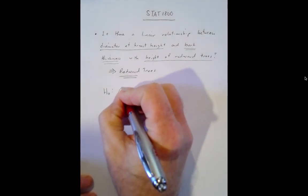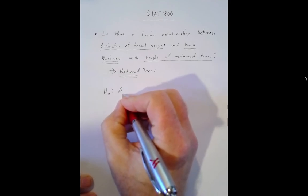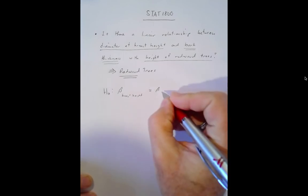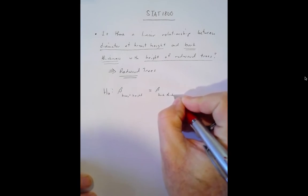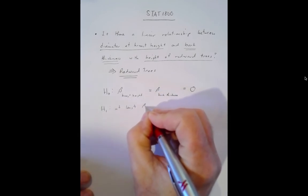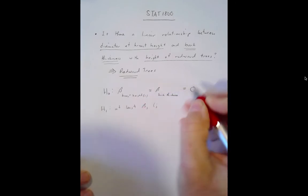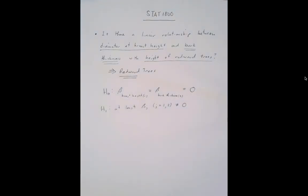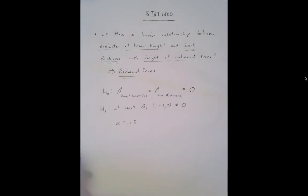Let me show my hand and tell you the game plan. The first thing I want to do is look at the overall model. The null hypothesis for the F-test would be that beta one for diameter at breast height equals beta two for bark thickness equals zero. The alternative is that at least one of these is not equal to zero. We'll set our alpha equal to 0.05.